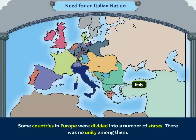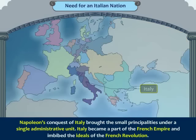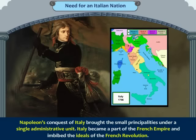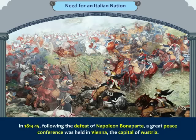Some countries in Europe were divided into a number of states with no unity among them. Similarly, Italy was divided into many small principalities. Napoleon's conquest of Italy brought the small principalities under a single administrative unit. Italy became a part of the French Empire and imbibed the ideals of the French Revolution.